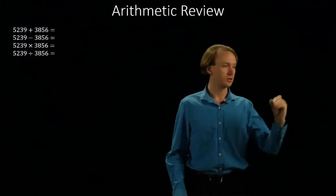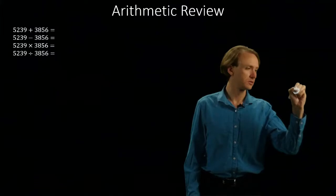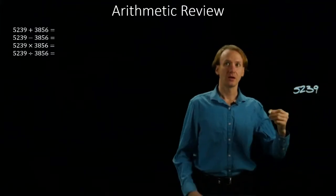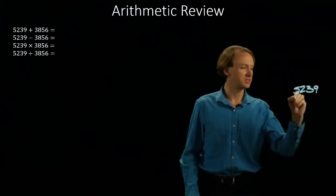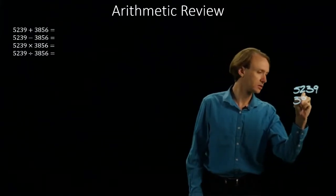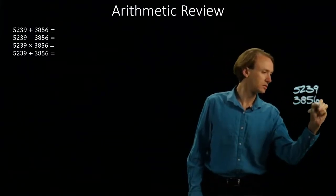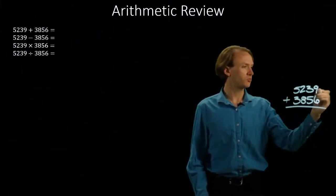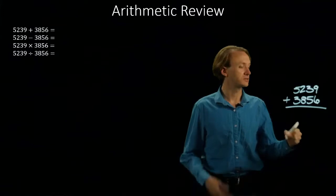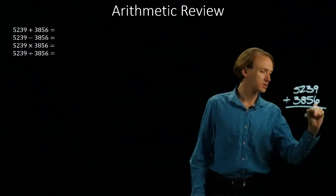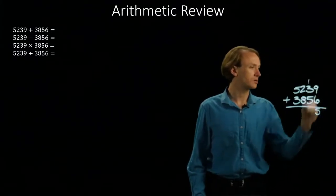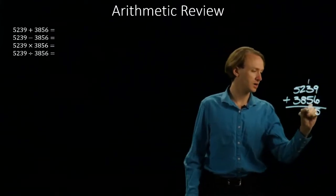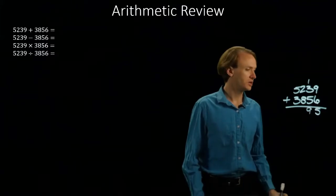So if I start with addition, I've got 5239, and I'm going to add 3856 to this. I start from the right and I've got 9 plus 6, 9 plus 6 is 15, so I'll write down a 5, and I'm going to carry the 1. Now I've got 1 plus 3 plus 5, which gives me 9, so I'll write down the 9.